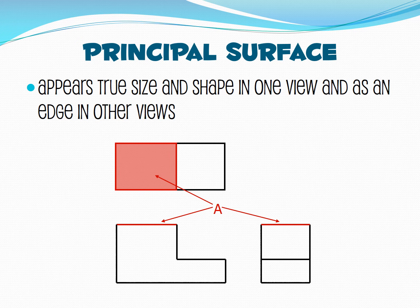Here's an example of a principal surface. You'll notice that on the top view it appears as a rectangle, and that rectangle coincides with the red lines shown on the front and right side view.